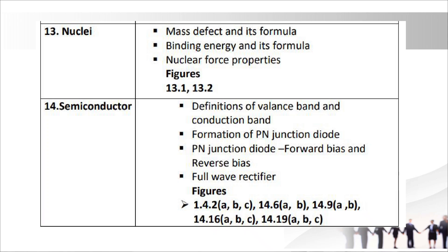Chapter 14: Semiconductors. Topics: definition of valence band and conduction band, formation of p-n junction, p-n junction diode, forward bias and reverse bias, and full wave rectifier. Important figures: 14.2 ABC, 14.6 AB, 14.9 AB, 14.16 ABC, 14.19 ABC.